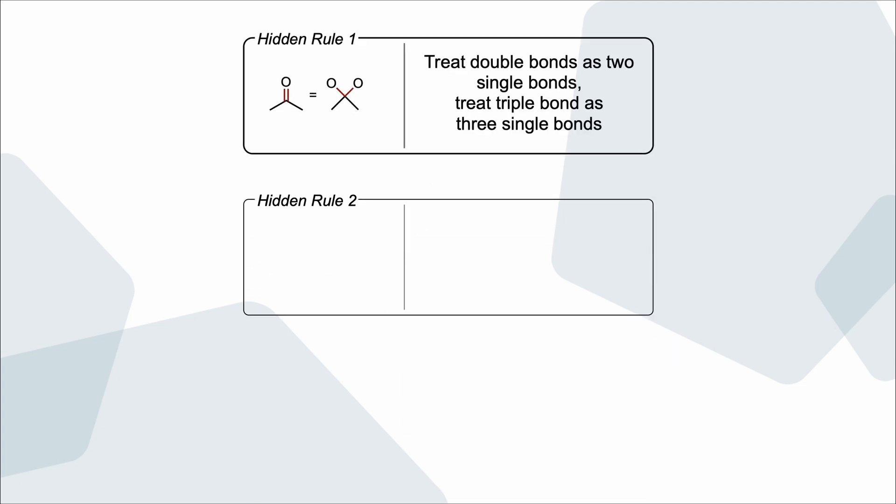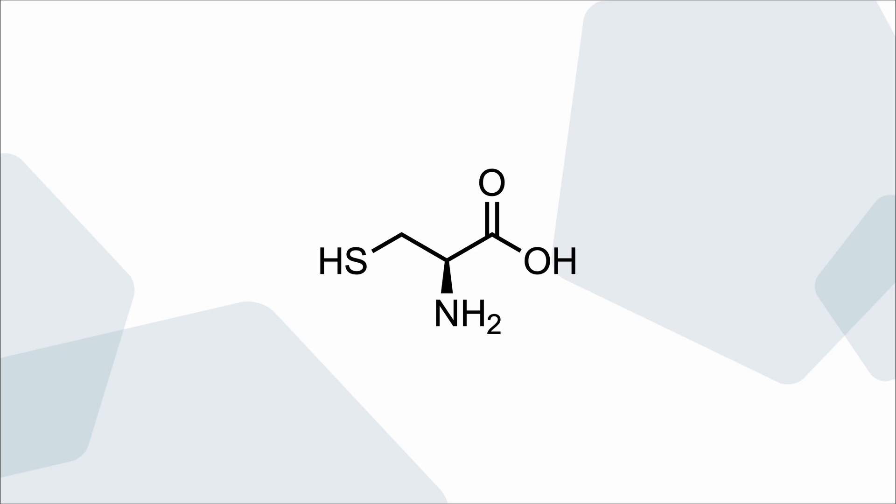For the second rule, let us consider cysteine. Beginners, including me back then, are often confused about the correct priorities of this stereogenic center. Why should the carbon on the left have a higher priority than the carbon on the right? In the end, the carbonyl on the right is bound to three oxygens, whereby the carbon on the left-hand side is bound to only one sulfur and two hydrogens. Well, the answer is that we are not allowed to add up the values of the substituents.